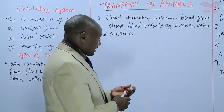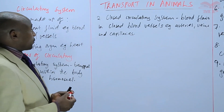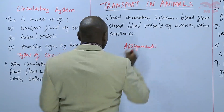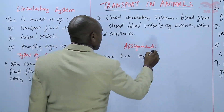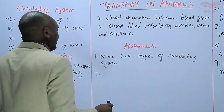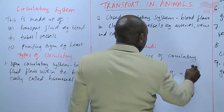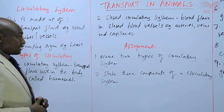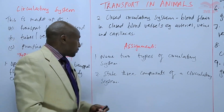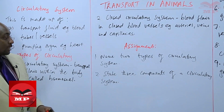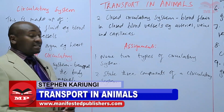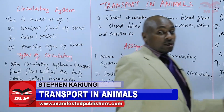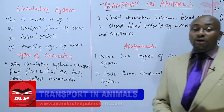Having fulfilled the first objective, we'll have a short assignment. The first question: name two types of circulatory system — we've just discussed them. Also, state three components that need to be present in a particular circulatory system. We'll stop there for now and continue from there. Goodbye.